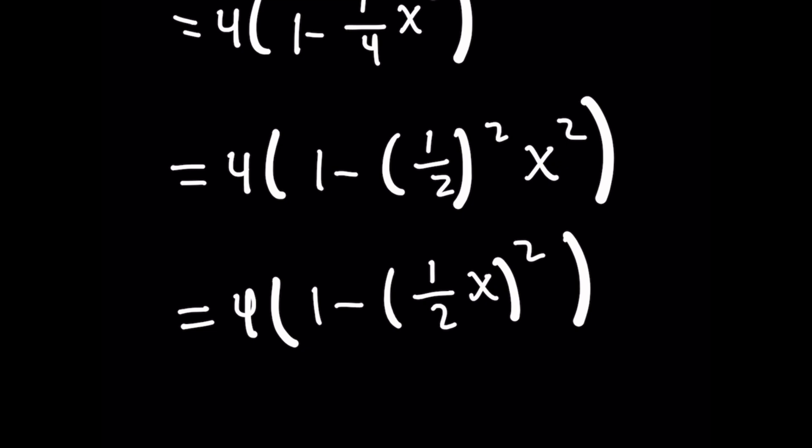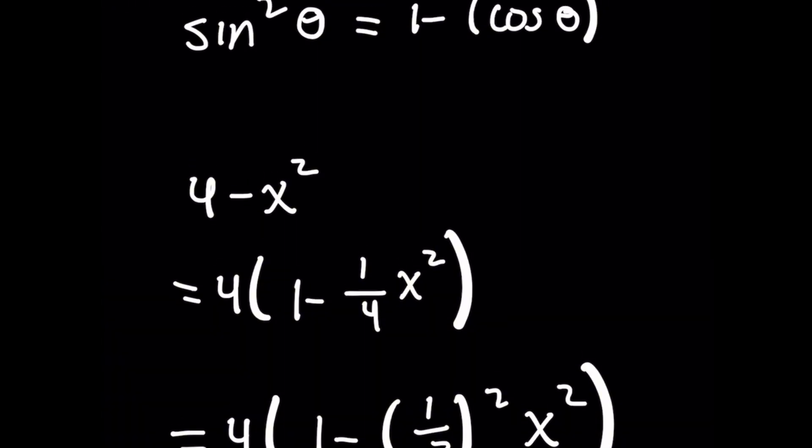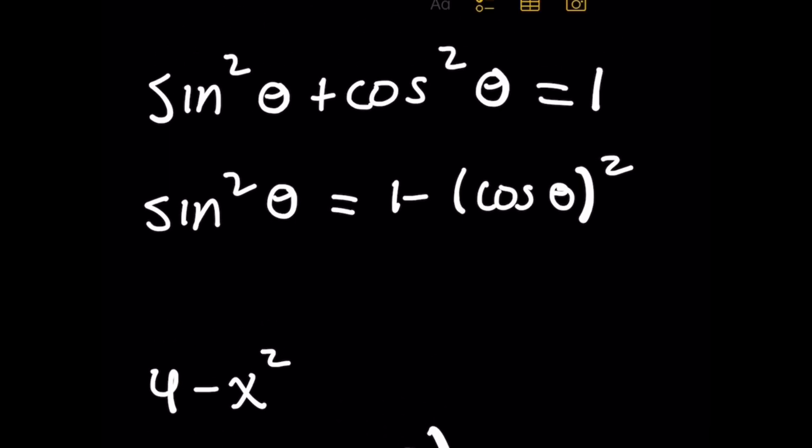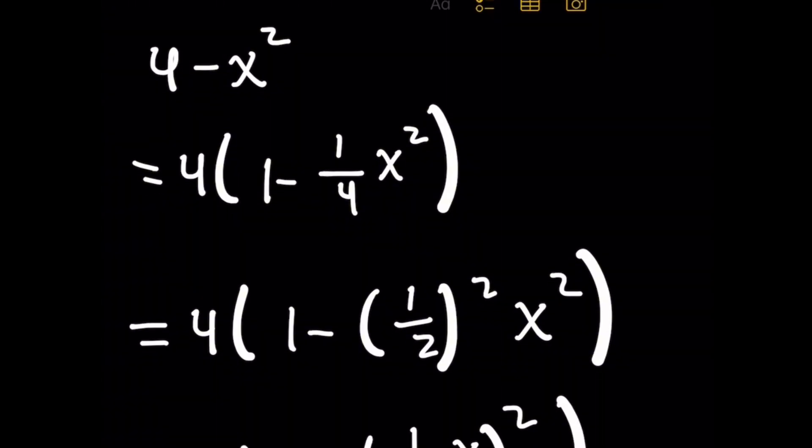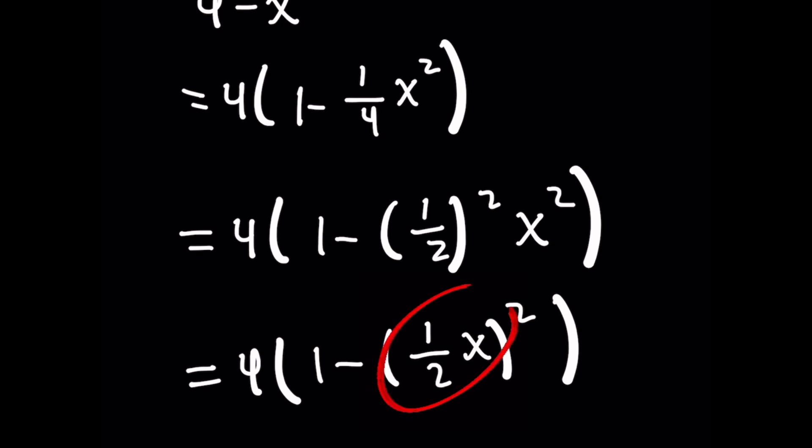and closer to looking like the trig identity because above you had 1 - something², and here you've got 1 - something². So I know I told you to think about what we could substitute in for the original integral to use the trig identity, and getting one step closer to that,